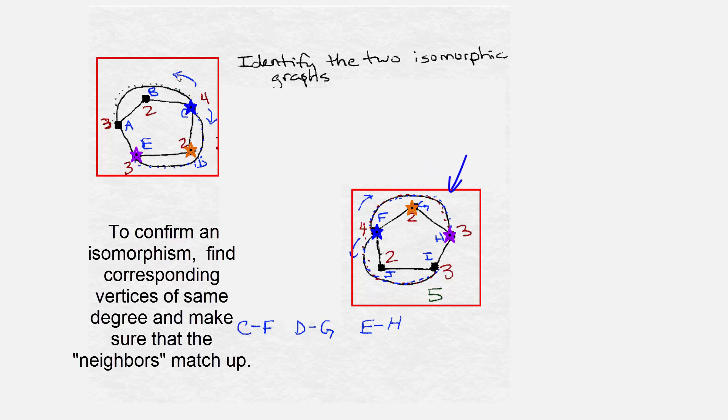So if E matches up with H, which by the way they're both degree 3 and that's required, what else matches up? Let's look at A. So A, you go from E to A, they're both degree 3. So from H, do we go directly to a degree 3 vertex? We do right here. What we have here is that A is matched up with I.